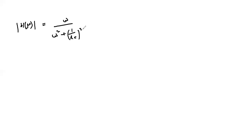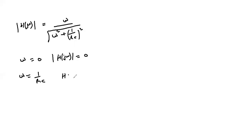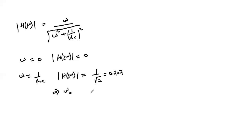When ω = 0, we have zero divided by a non-zero number, so the magnitude is zero. When ω = 1/RC, the term (1/RC)² equals (1/RC)², so the magnitude becomes 1 over √2, which is 0.707. This corresponds to the cutoff frequency, since the cutoff frequency is the frequency at which the magnitude is 0.707 times the maximum magnitude.